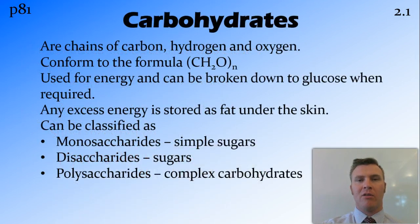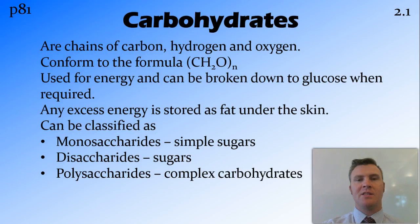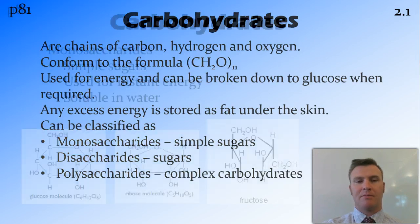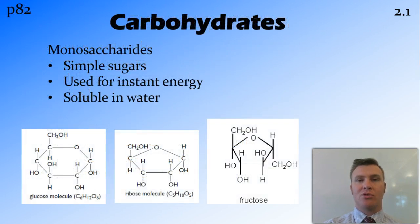The first example of an organic compound is carbohydrates. Carbohydrates are molecules made up of carbon, hydrogen, and oxygen, and are generally used for energy inside the cell, broken down into glucose for that to happen. Glucose is an example of a monosaccharide, which is the simplest type of carbohydrate. We then have disaccharides and polysaccharides. Monosaccharides are simple sugars used for instant energy, and they are soluble in water.